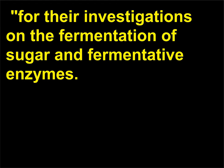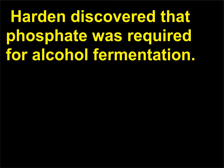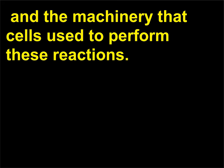For their investigations on the fermentation of sugar and fermentative enzymes. Harden and Euler-Chelpin were biochemists who independently investigated fermentation processes. Harden discovered that phosphate was required for alcohol fermentation. Euler-Chelpin studied the means by which living cells produced energy by degrading sugar molecules, and the machinery that cells used to perform these reactions.